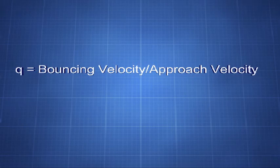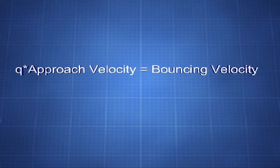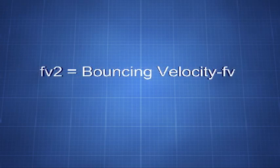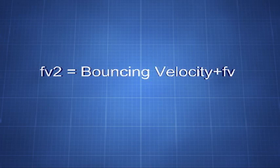And as we have studied before, if we invert this equation, q equals bouncing velocity divided by the approach velocity, to q times approach velocity equals bouncing velocity. Knowing the total bouncing velocity, we can conclude that the final velocity of m2 or fv2 is just the result of bouncing velocity minus the final velocity of m1. And because of the signs of the numbers involved, it is expressed as fv2 equals bouncing velocity plus fv.